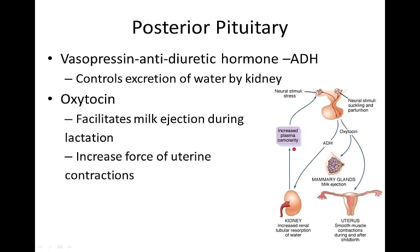Posterior pituitary. The important hormones secreted by the posterior lobe of the pituitary gland are vasopressin, also called antidiuretic hormone or ADH, and oxytocin. These hormones are synthesized in the hypothalamus and travel from the hypothalamus to the posterior pituitary gland for storage. Vasopressin controls the excretion of water by the kidney; its secretion is stimulated by an increase in osmolality of the blood or by a decrease in blood pressure. Oxytocin facilitates milk ejection during lactation and increases the force of uterine contractions during labor and delivery. Oxytocin secretion is stimulated during pregnancy and at childbirth.